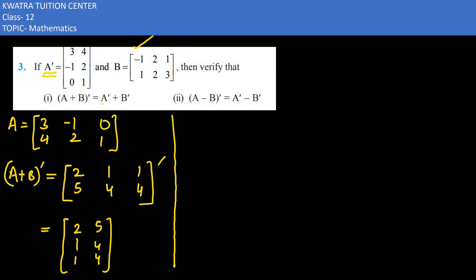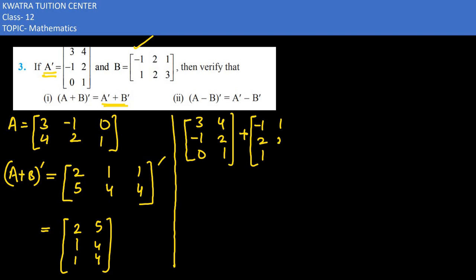Isi tarike se hamen A dash aur B dash ko add karna hai. A dash already hamare paas hai: 3, minus 1, 0, 4, 2, 1. Aur B dash hai: minus 1, 2, 1, 1, 2, 3. Dono ko add karne par: 3 minus 1 is 2, minus 1 plus 2 is 1, 0 plus 1 is 1, 4 plus 1 is 5, 2 plus 2 is 4, 1 plus 3 is 4.